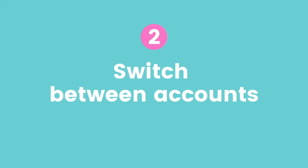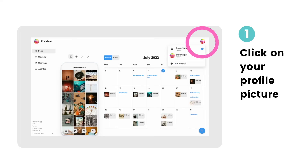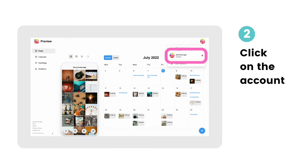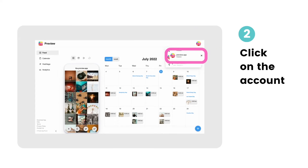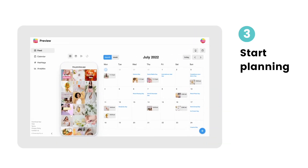Now here's how to switch between Instagram accounts. Before I show you how to do it on Instagram, here's how to do it on Preview desktop — the steps are the exact same thing. Click on your profile picture on the top right, click on the account you want to switch to, and start planning your posts.